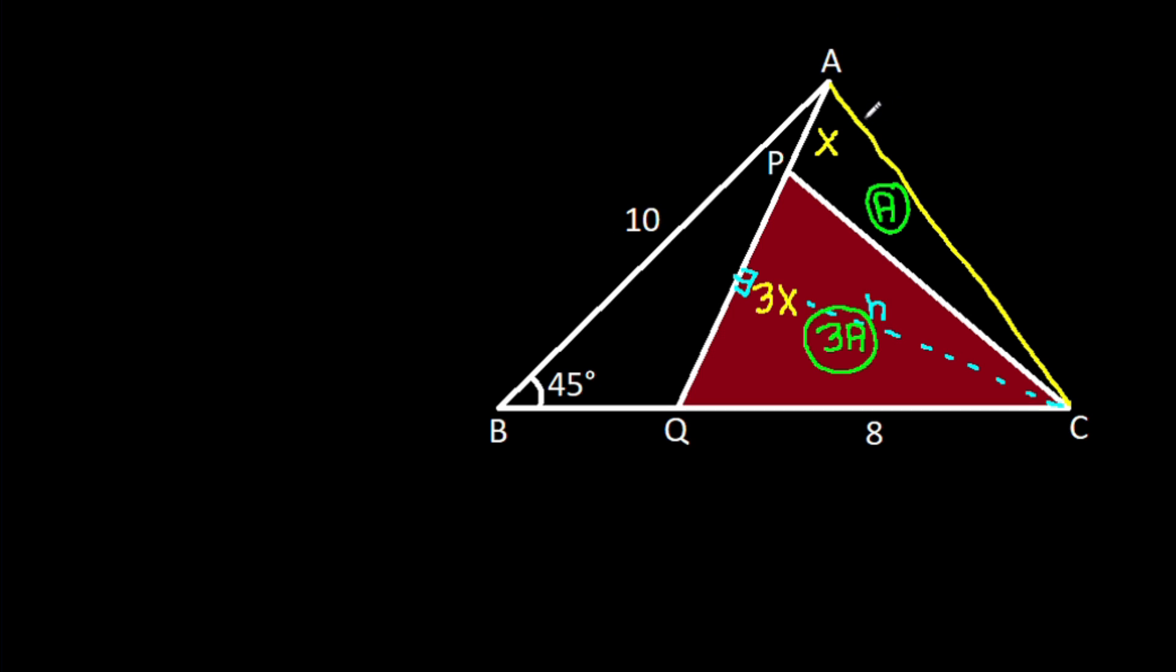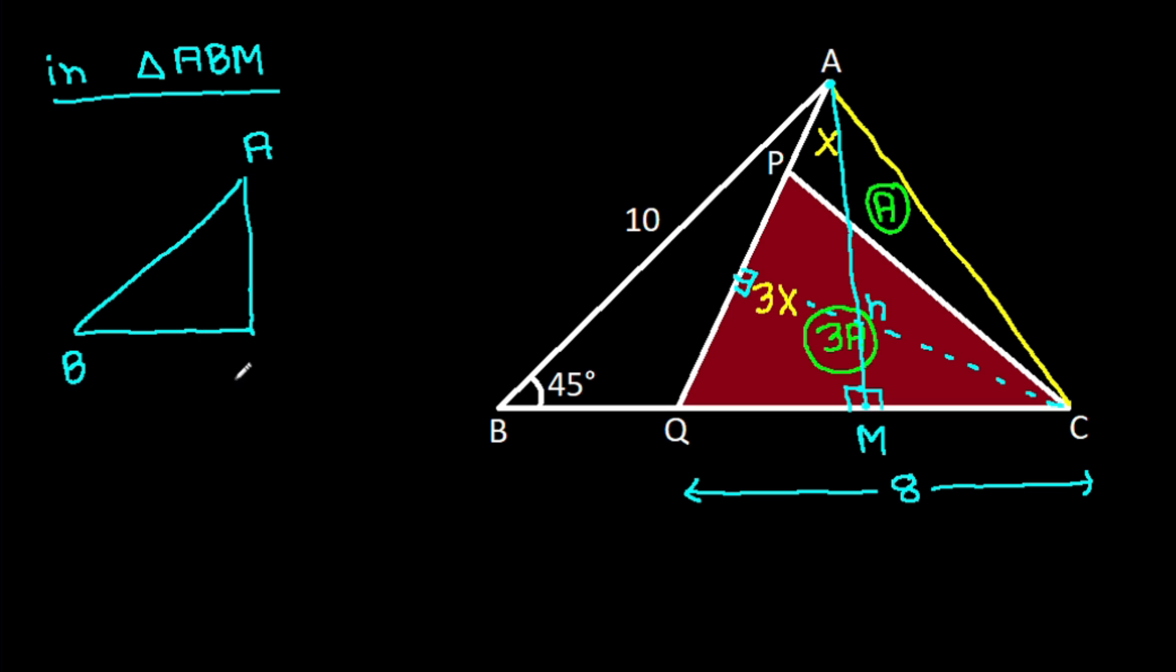Now, from point A, if we make a perpendicular on BC, we have CQ is 8. And suppose this point is M, then in triangle ABM, this angle is 90 degrees, this angle is 45 degrees, and AB is 10.